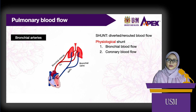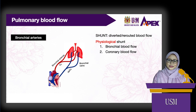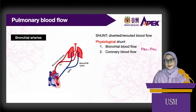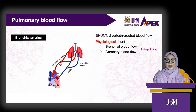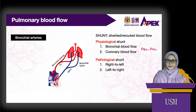So arterial pressure of oxygen will always be slightly less than the alveolar pressure. There are also pathological shunts, either right-to-left shunts or left-to-right shunts.